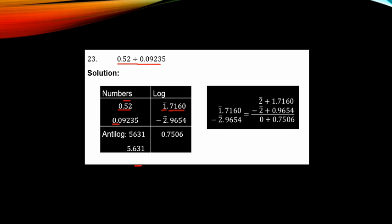For the second number, we have 2 zeros before the first non-zero digit 9, so the characteristic is minus 2, written as bar 2. You check 92 under 3, difference 5, giving mantissa 9654.